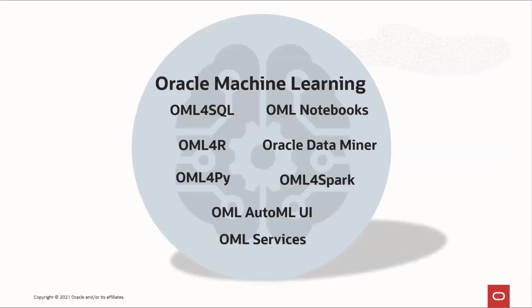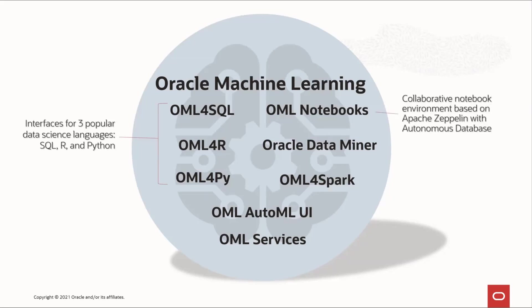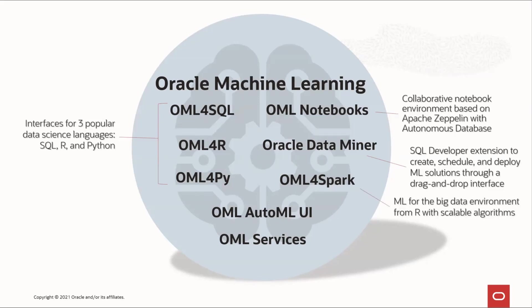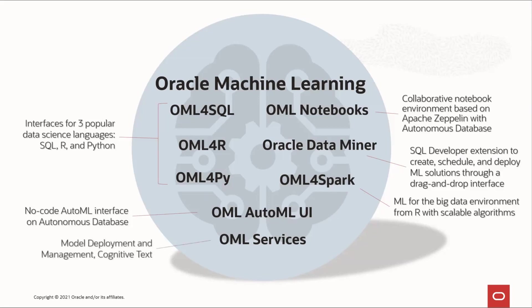Let's touch briefly on the broader Oracle Machine Learning product family that supports data science projects. Oracle Machine Learning provides interfaces for three popular languages: SQL, R, and our focus here, Python. For interaction with Autonomous Database, we provide OML notebooks based on Apache Zeppelin with SQL and Python interpreters. Oracle Data Miner is a SQL developer extension that enables users to create, schedule, and deploy analytical workflows through a drag-and-drop user interface. Oracle Machine Learning for Spark provides machine learning in the big data environment with native scalable algorithms, as well as Spark MLLib algorithms. Oracle Machine Learning AutoML UI is a no-code user interface that automates model building, selection, and deployment. And Oracle Machine Learning Services is a REST-based service for model deployment and management, along with cognitive text.